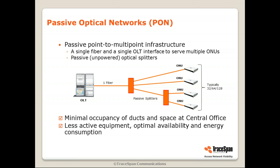PON is a network topology which has been around for many years. It is characterized by the following topology. You have an active unit at the service provider's point of presence, usually the central office — it's called the OLT, optical line termination. There are active units at the customer's end called ONUs or ONTs, optical network unit or optical network termination.